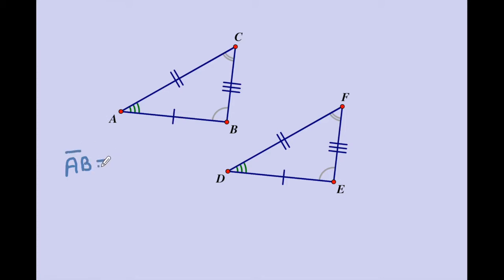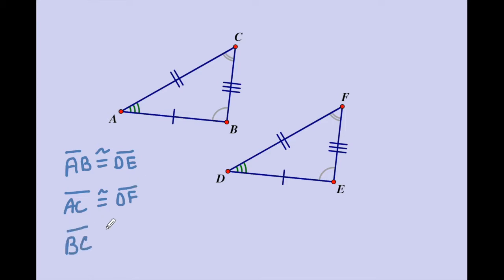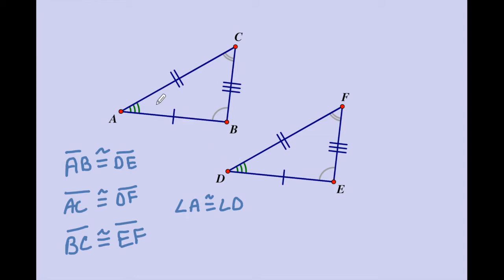AB is congruent to DE — we know that because each one has a single tick mark. Then we'll go to the double tick marks: AC is congruent to DF because each of them are marked the same. And then we'll finish with the triple tick marks: BC is congruent to EF. So the triangles have three sets of sides that are congruent. They are also going to have three sets of angles that are congruent. Angle A is congruent to angle D, and we know that because each angle has three arcs — that's how we mark off angles as being equal.